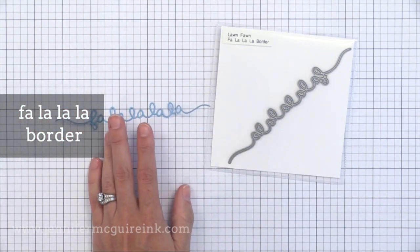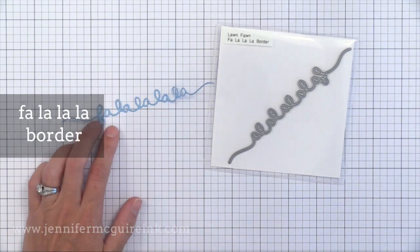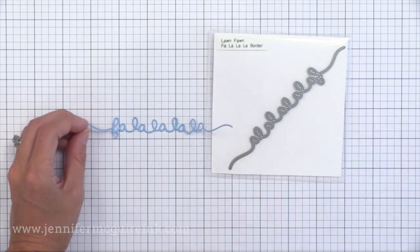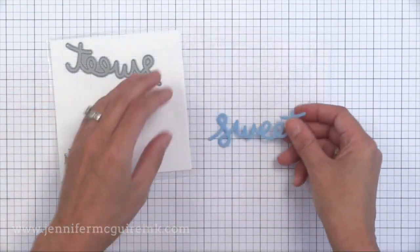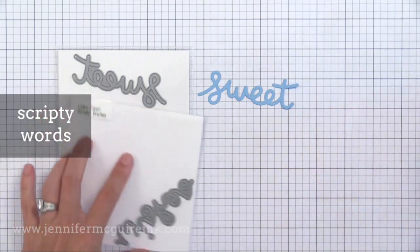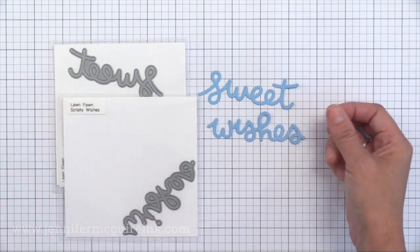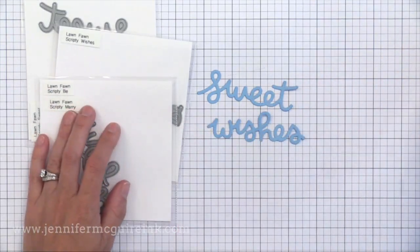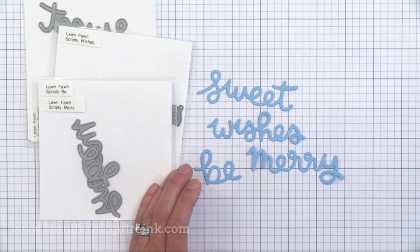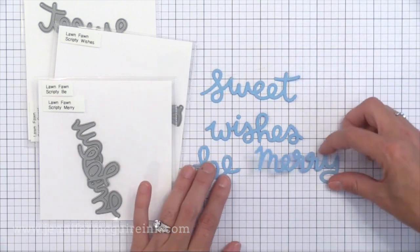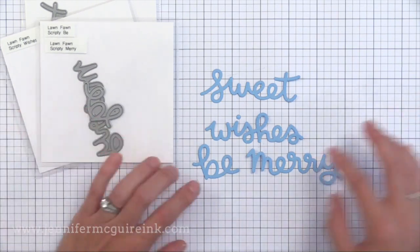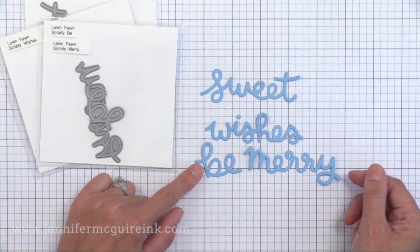There are some fun word dies in this release. This is the Fa La La Border and this one stretches along a card nicely. Lawn Fawn has a lot of these in different sentiments and they've been very popular. They also released more of their scripty words and there are four different words in this release. They're sweet, wishes, be and merry. I store be and merry together in the same pocket because I feel they fit together nicely. I've really been a big fan of these scripty words from Lawn Fawn because I think the script is really fun and they're bold so they really stand out on top of maybe a bunch of stamped images on a background. I like to have bold sentiments, die cuts, and some dainty ones like the ones I showed you earlier.